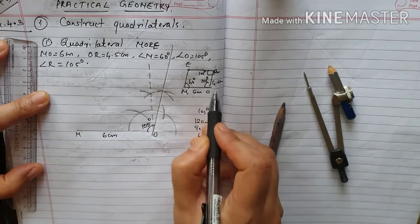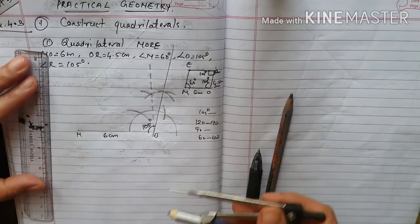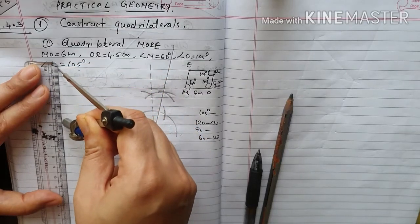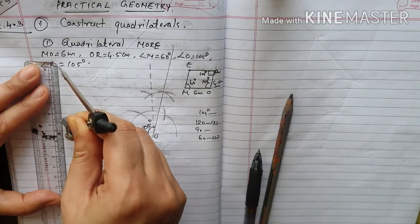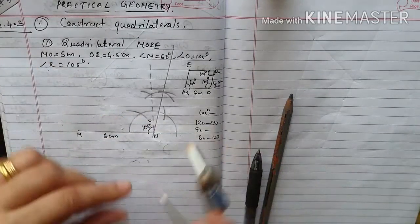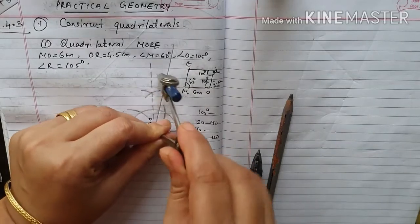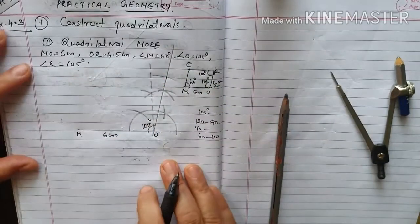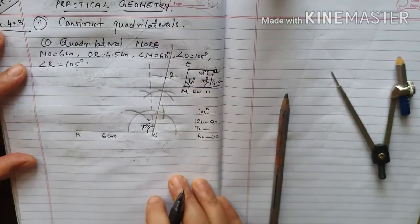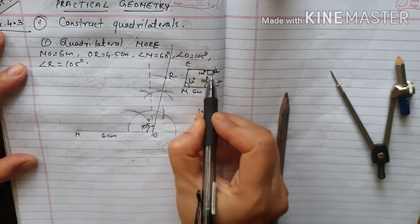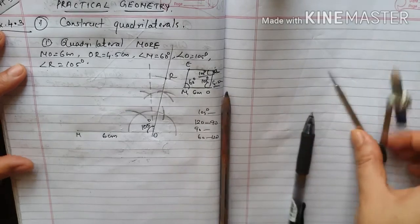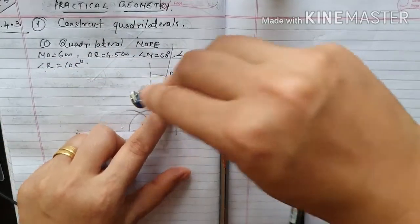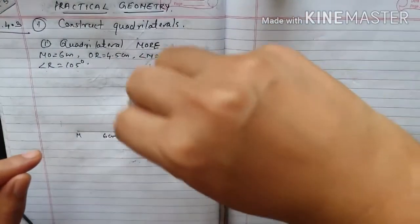The measurement of OR is equal to 4.5 centimeters. To draw OR, make a scale of 4.5 centimeters. At point R, make the point of intersection, then draw the angle at R — draw a single angle line from that point.